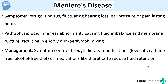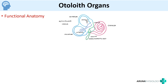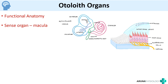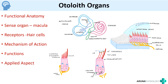To summarize how to answer a short note on otolith organs: start with functional anatomy and draw the diagram, then write about the sense organ — the macula — and draw its diagram, which is very important. Then mention the receptors, which are hair cells, and their mechanism of action. Next, write about how the utricle and saccule function and what activates them. Then write about the functions of utricle and saccule and finish with an applied aspect. I hope this concept is clear. Thank you.